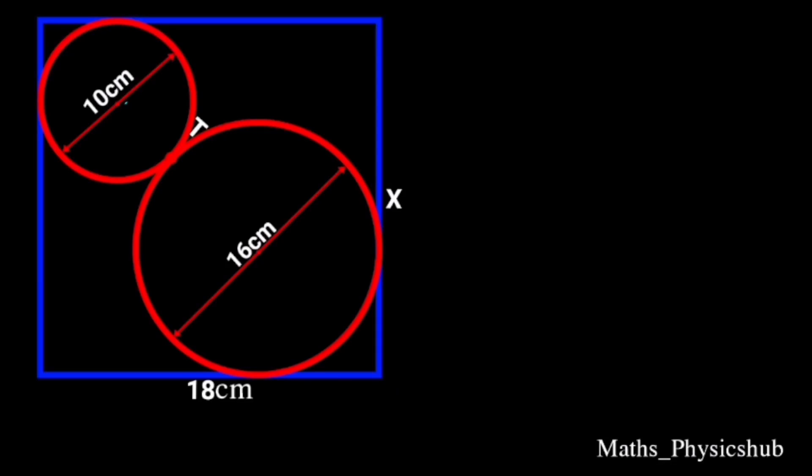This diagram shows two circles of diameters 10 cm and 16 cm touching externally at point T. The two circles are fitted into a rectangle of sides 18 cm and x cm. Calculate x and hence the area of the rectangle. Note that this diagram is not drawn to scale. Let's go ahead and solve.